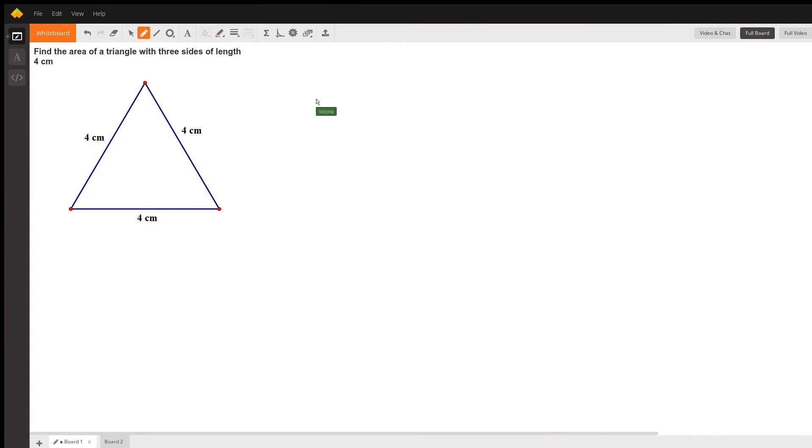Find the area of a triangle with three sides of length four centimeters, which is drawn right here.